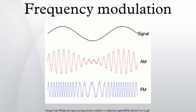In this equation, the instantaneous frequency of the oscillator and the frequency deviation represents the maximum shift away from FC in one direction, assuming Xm is limited to the range plus or minus one.